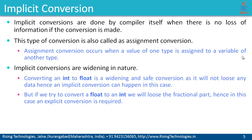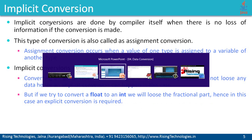But if we try to convert a float to an integer, we know that we will lose the fractional part. Hence, in this case, explicit conversion is required. This kind of conversion will not be performed by the compiler automatically. So let's have a look at implicit conversion.